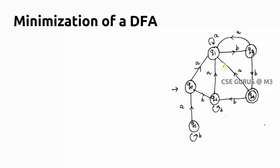Checking reachability: q1 is reachable from q0 via input 'a'. q2 is reachable via q0 to 'b'. q3 is reachable via q0→q1→q3. q4 is reachable via q0→q1→q3→q4. However, q5 cannot be reached from q0 via any path, so q5 is not required and can be removed.